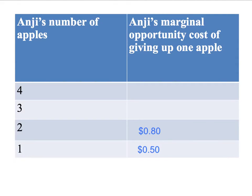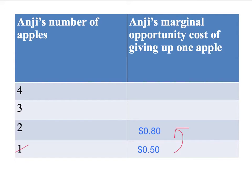Notice that Anji's marginal opportunity cost of giving up the first apple, when she has four apples, is only 50 cents. But the marginal cost of giving up a second apple when she's already given up the first apple is higher — it's 80 cents. Is that sensible? Yes. If you've got four apples, you would expect the marginal opportunity cost of giving up a first apple would be lower than the opportunity cost of giving up an apple when you've only got three apples. In other words, the more apples you have, the lower your marginal opportunity cost. So we would expect Anji's marginal opportunity cost to be going up as she gets fewer and fewer apples.